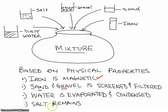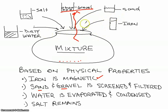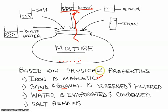And the salt, because it's heavy, would remain as the water evaporated and got caught on a colder surface. The iron could be picked out with a magnet, and the sand, dirt, and gravel could all be screened or filtered out with different-size filters.